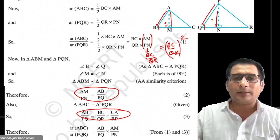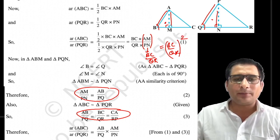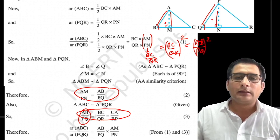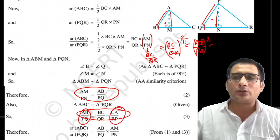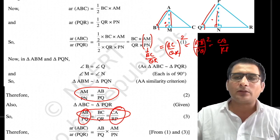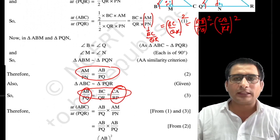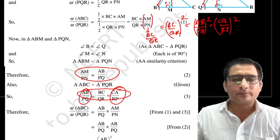Toh proof ho gaya. AM upon PN ko BC upon QR se replace karne par, area ratio = (BC upon QR)² ban jaata hai. BC upon QR ki jagah AB upon PQ rakh do toh yeh AB upon PQ ke square ke equal ho jayega. Iske jagah CA upon RP rakh do, toh CA upon RP ke square ke equal ho jayega. So this is the proof of this theorem. I hope this proof is clear to you all.